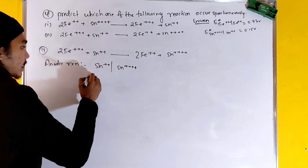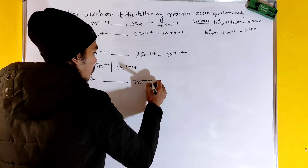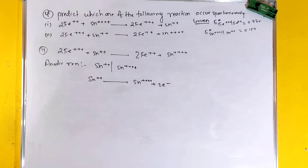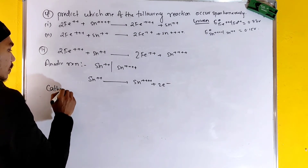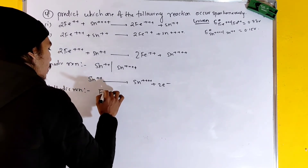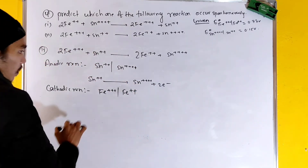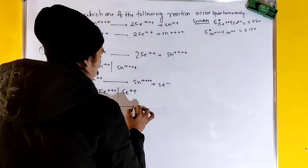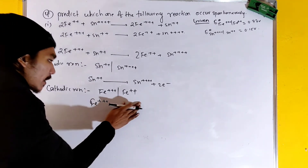Now for the second reaction: Sn²⁺ going to Sn⁴⁺ plus 2 electrons — this is the anodic reaction formation. For the cathodic reaction: Fe³⁺ at the cathode gains electrons to form Fe²⁺. Electrons are added to Fe³⁺ to form Fe²⁺.